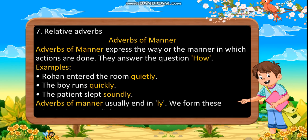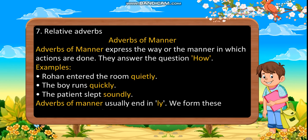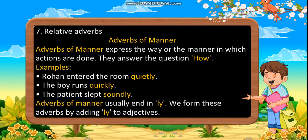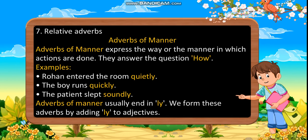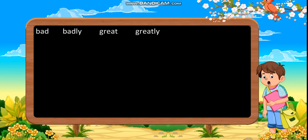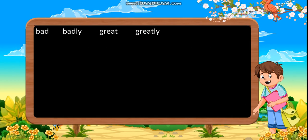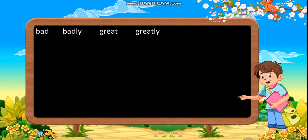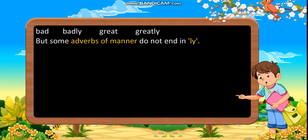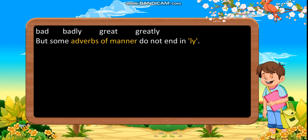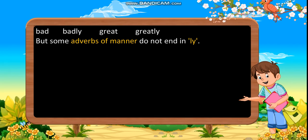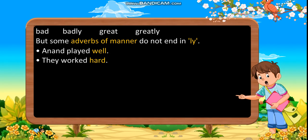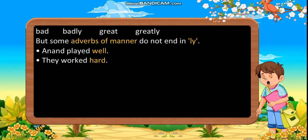Adverbs of manner usually end in -ly. We form these adverbs by adding -ly to adjectives. For example: bad becomes badly, great becomes greatly. But some adverbs of manner do not end in -ly. For example: Anand played well. They worked hard.